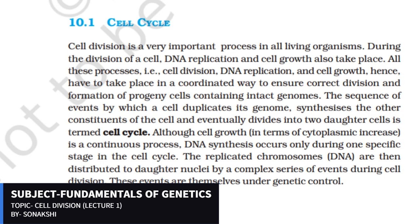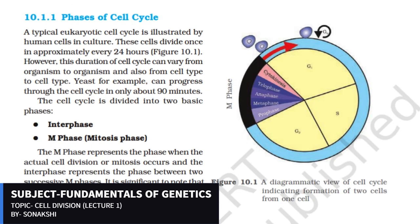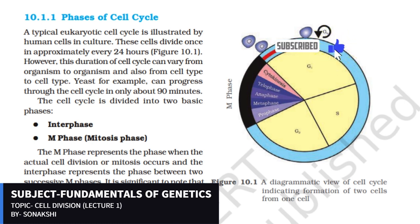Let me give you an example of the eukaryotic cell. The eukaryotic cell cycle takes about 24 hours to complete, though this duration can vary in different organisms.